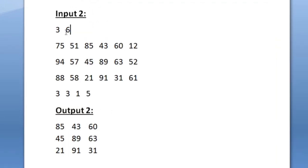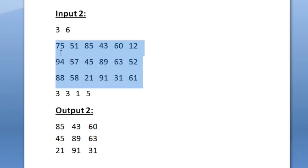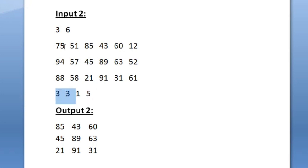Now let us see sample input 2. Here the value of r is 3 and the value of c is equal to 6. We are given an r cross c matrix as input, and then the four integers. The first two integers are 3,3 - so the third row third column element, which is 21 - and then 1,5, meaning first row fifth column.